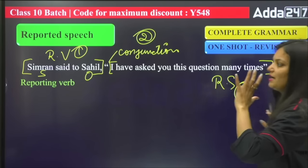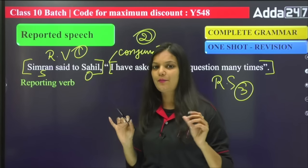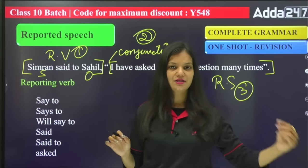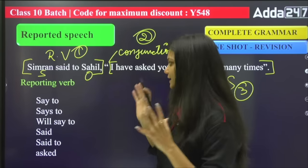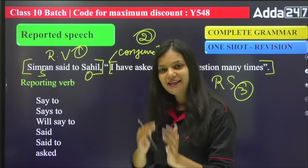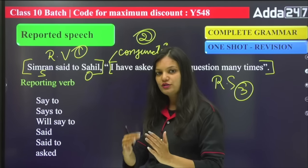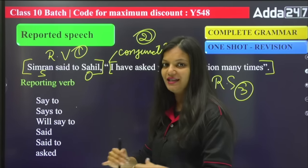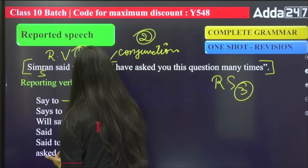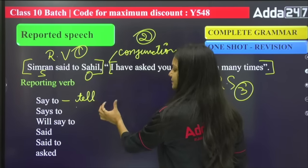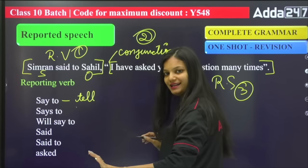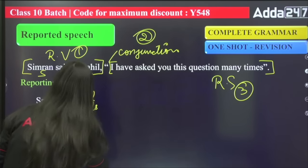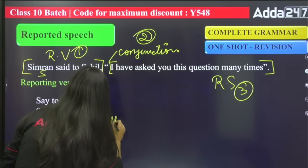First, when you have written a reporting verb, you need to know what the reporting verb is in your sentence — whether Simran has spoken in the present, past, or future. If spoken in the present, you change it directly. The reporting verb 'say to' changes to 'tell.' Many children write 'tell to' — no, only 'tell.' 'Say to' changes to 'tells' or 'tells.' 'Will say to' changes to 'will tell.'